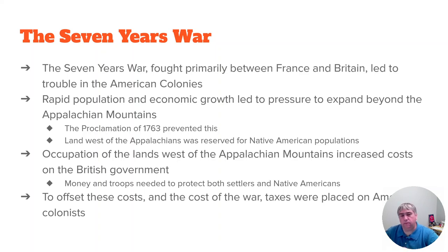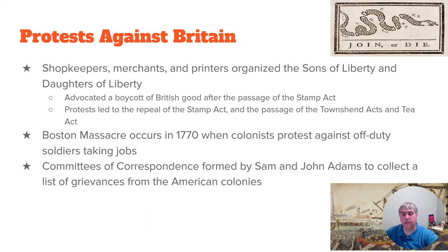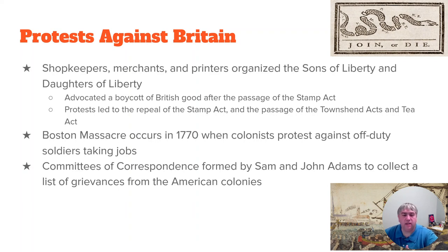Shopkeepers, merchants, and printers organized something called the Sons of Liberty and the Daughters of Liberty, whose purpose was to advocate for a boycott of British goods. This boycott was successful — the Stamp Act, put in place in 1765, was repealed in 1766. But it was replaced by other acts, like the Townshend Acts and the Tea Act, so the colonists were still taxed and oppressed.